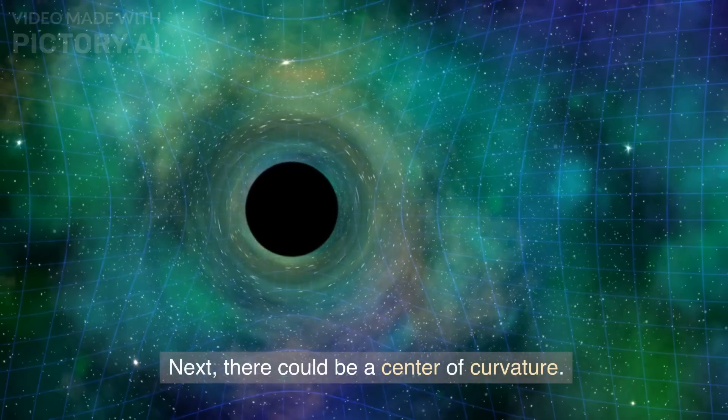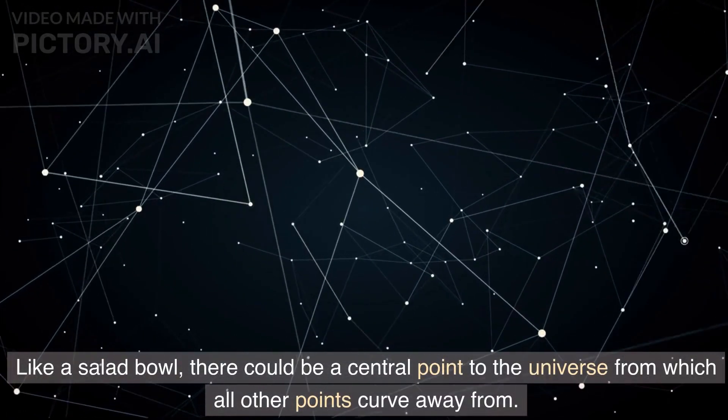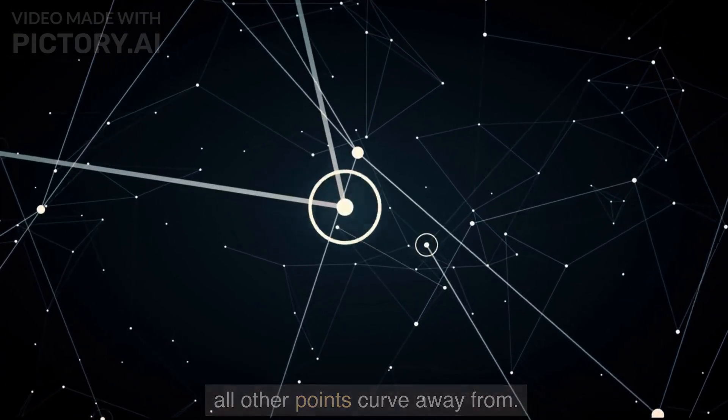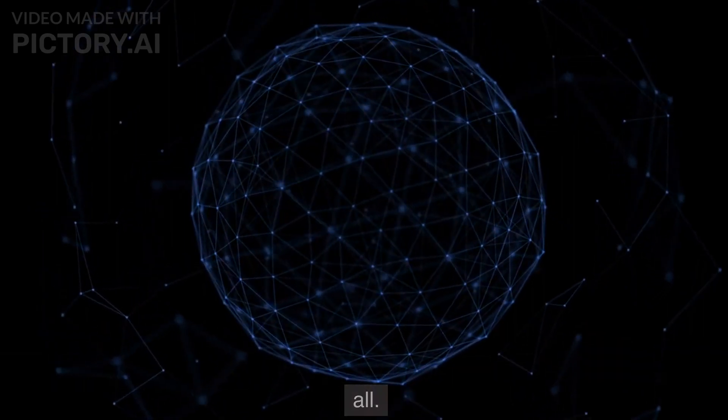Next, there could be a center of curvature. Like a salad bowl, there could be a central point to the universe from which all other points curve away from. But current observations have found the universe to be flat and not curved at all.